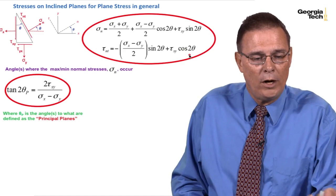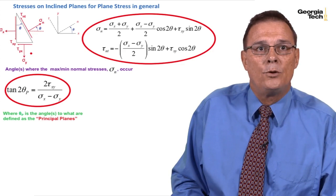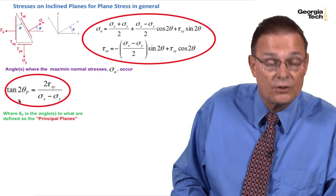We have transformation equations for stress where we know stress in certain directions and we can find the normal and the shear stresses on any other plane using these transformation equations. And we found an angle to what we call where we find the maximum or minimum normal stresses to occur with this tangent relationship.